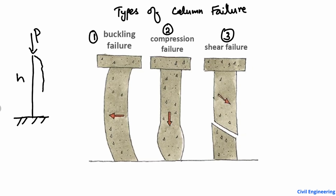The column shows deformation in the lateral direction — in the X-axis direction — and it moves to a new position with a deformation of X, where X is a small lateral deformation. This kind of failure is known as buckling failure. You can see here when a load is acting on the column, there is deformation from its original shape to a new shape.